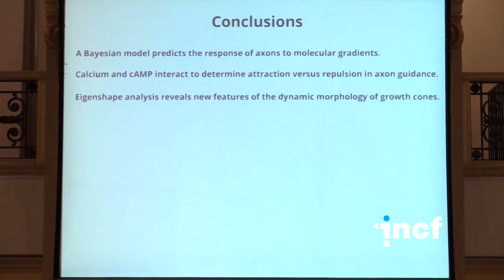To conclude: I discussed how a Bayesian model predicts the response of axons to molecular gradients; how calcium and cyclic AMP interact to determine attraction versus repulsion in axon guidance; and how eigenshape analysis can help reveal new features of the dynamic morphology of growth cones. Thank you very much for your attention.